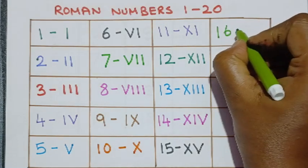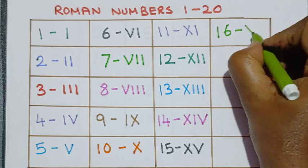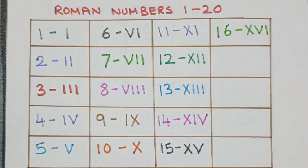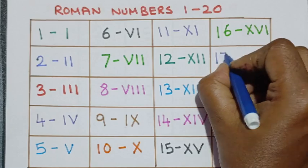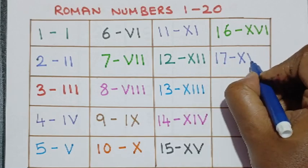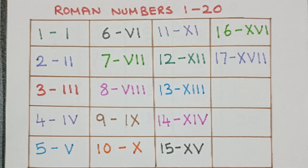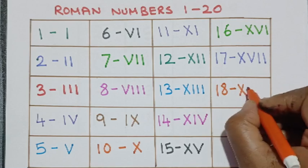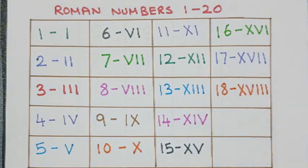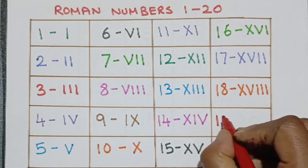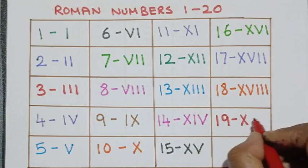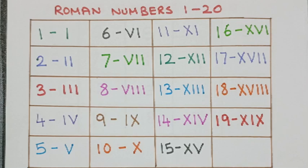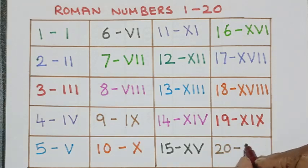Then comes 16 this is Roman 16. Next one is 17 Roman number 17, then 18 this is Roman 18, then 19 this is Roman number 19, and then comes 20 this is Roman number 20.